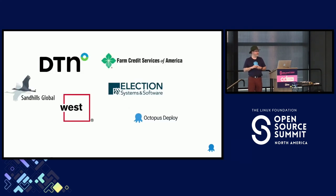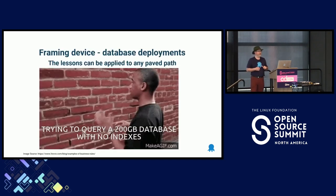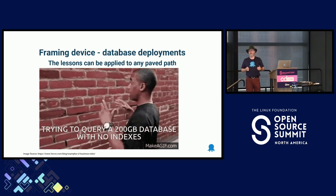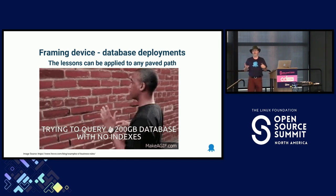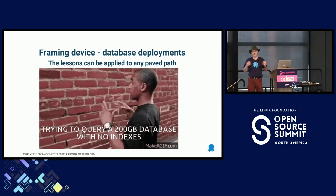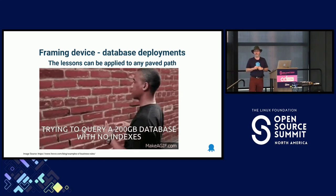This story starts back when I was working at Farm Credit Services of America. If you're not familiar with Farm Credit Services of America, don't worry — most people are not. It's ostensibly a credit union for farmers. I'm going to be using a framing device today to tell you about the lessons that I learned, which was automating database deployments. And if you've ever automated database deployments, you know sometimes it's like talking to a brick wall.